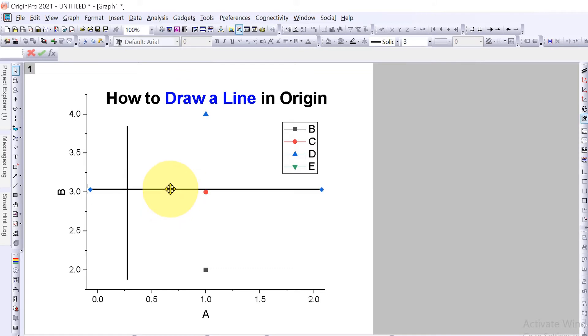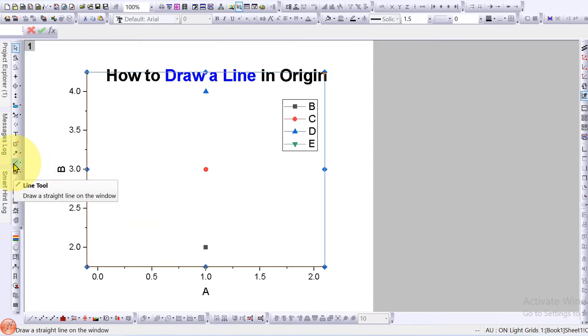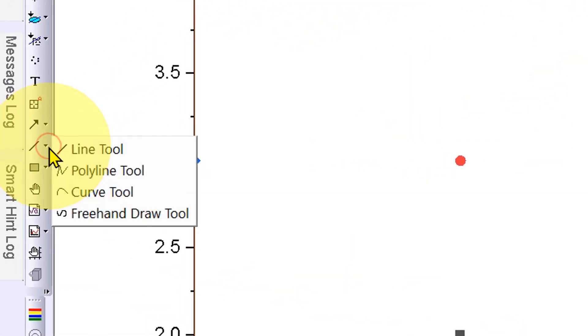It's very easy, let's get started. At the right-hand side, you will see this option: Line Tool. To draw a straight line in the graph, click on this small downward triangle and you will see the option Line Tool. Click on it.